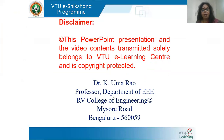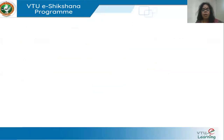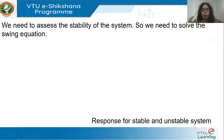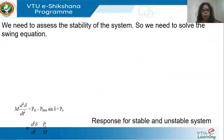This is Professor Umarow from RV Engineering College bringing you the lecture. To assess the stability of the system, we need to solve the swing equation. The swing equation is given by M times d²δ/dt² equals Pm minus Pe, where Pm is the mechanical power input to the generator.